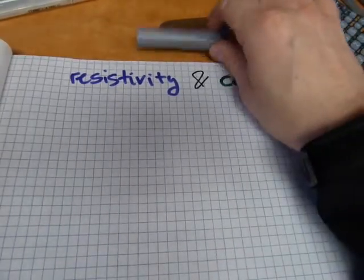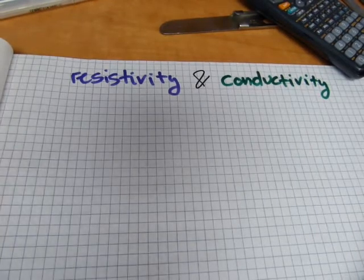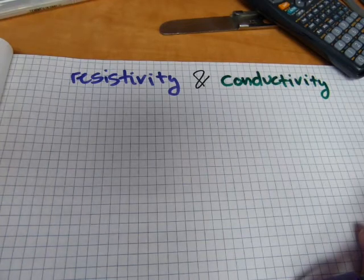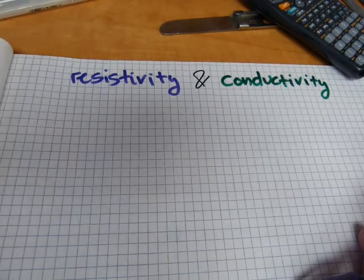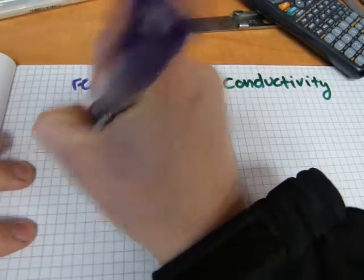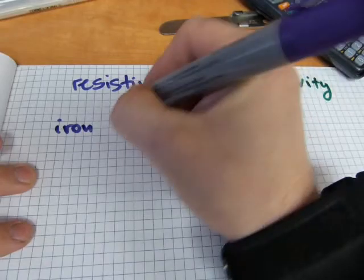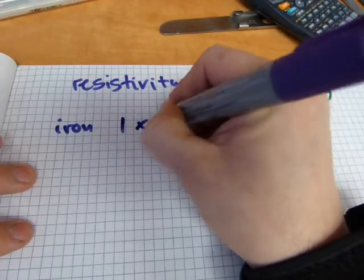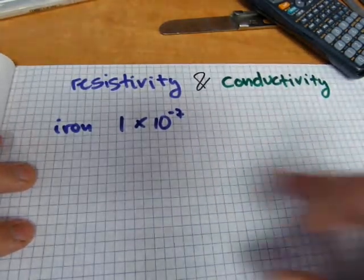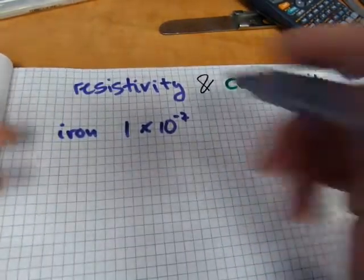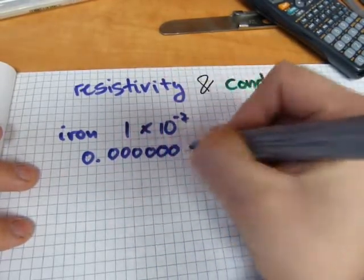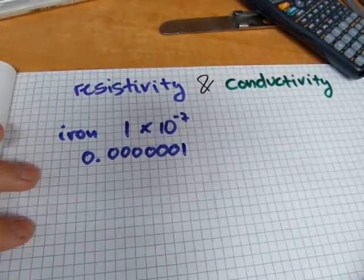Resistivity is expressed with numbers, and these numbers are in scientific notation, and that involves negative exponents. For example, the resistivity of iron is 1 times 10 to the power of negative 7. That's in scientific notation. If you want to make it into a decimal: one, two, three, four, five, six, seven. There, that's how it looks like.